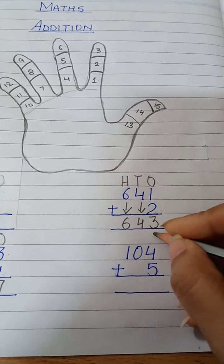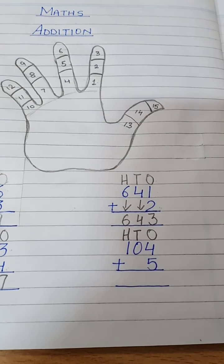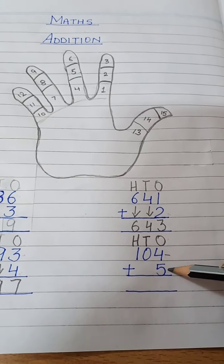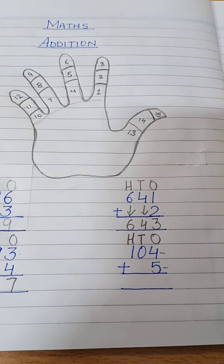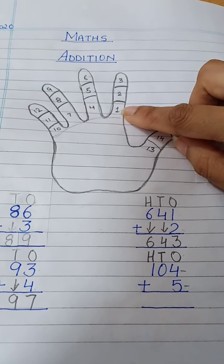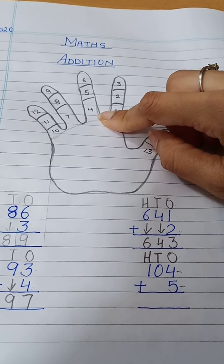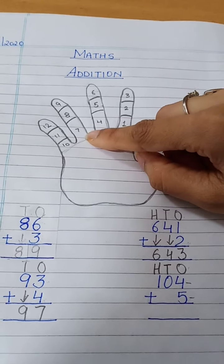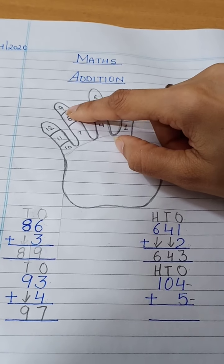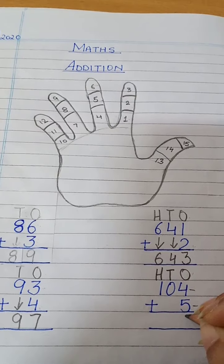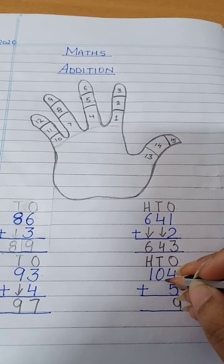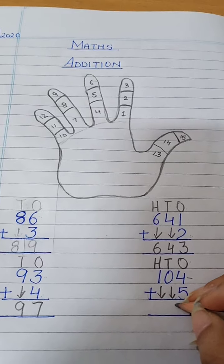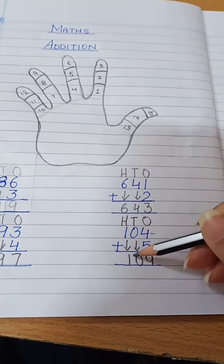Same here — we have ones, tens, and hundreds place. First we will add the ones digit: 4 and 5. So I count 4: 1, 2, 3, 4. Now I take 5: 1, 2, 3, 4, 5. Which number did I get? I got 9. So I will write 9. Below 0 there is nothing, and below 1 there is nothing, so we put them as they are — 0 and 1. And we got the number 109.